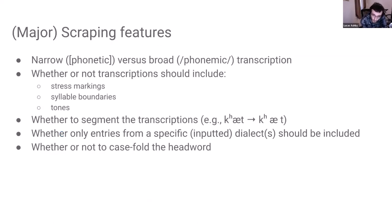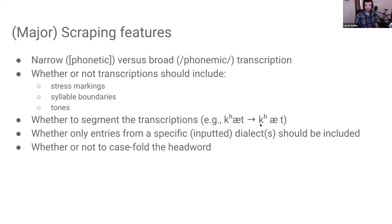Some of the major scraping features we've added: you can target whether you want narrow phonetic transcriptions or broad phonemic transcriptions. You can specify whether those transcriptions should include stress markings, syllable boundaries, or tones. You can specify whether you want those transcriptions to be segmented — meaning whitespace has been added between each phone — relying on another open source package called "segments" to do this intelligently, keeping aspiration diacritics with the phone they apply to. You can specify the dialects you want to scrape, and whether you want to case-fold the head word.